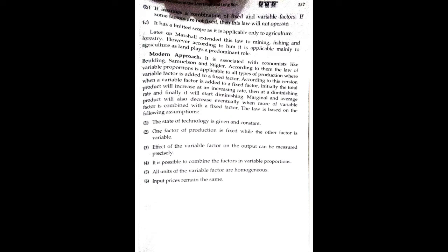According to them, the law of variable proportion is applicable to all types of production where a variable factor is added to a fixed factor. When the variable factor is added to the fixed factor, initially the total product will increase at an increasing rate, then at a diminishing rate, and finally it will start diminishing. Marginal and average product will also eventually decrease.